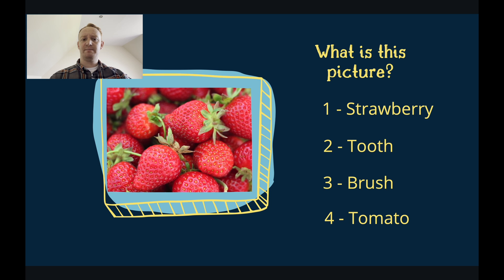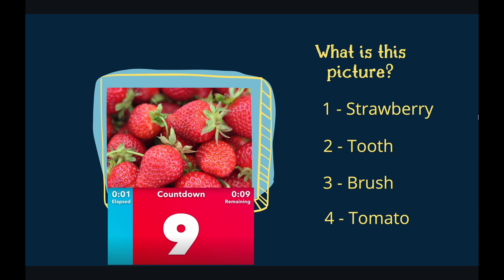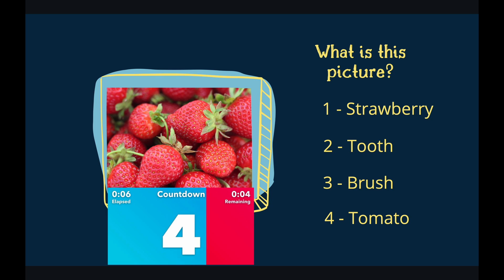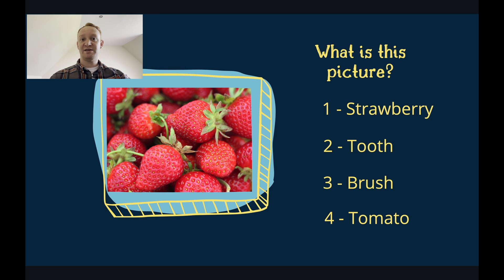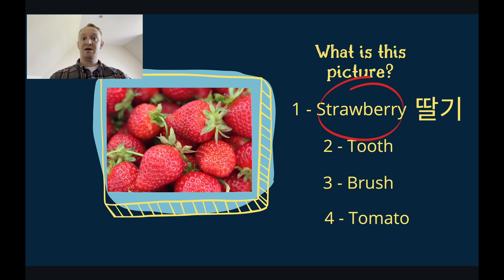What is this a picture of? Is it strawberries? Is it teeth? Is it brushes? Or is it tomatoes? You've got 10 seconds. It is strawberries. These strawberries are red. These strawberries have green leaves. Strawberries taste great with cream.